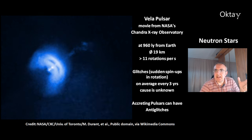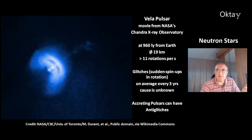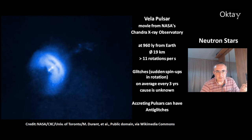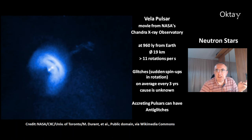This is an example of a pulsar — the Vela pulsar. It's a movie from NASA's Chandra X-ray Observatory. The Vela pulsar is located at 960 light years from Earth and its size is 19 km. It rotates 11 times per second. The Vela pulsar experiences glitches — these are sudden spin-ups in its rotation. They happen on average every 3 years, and the cause is unknown.